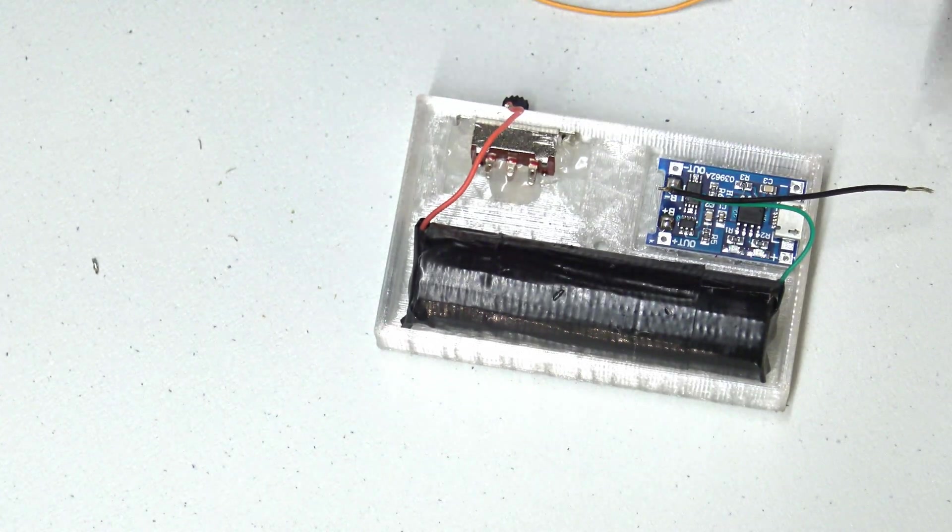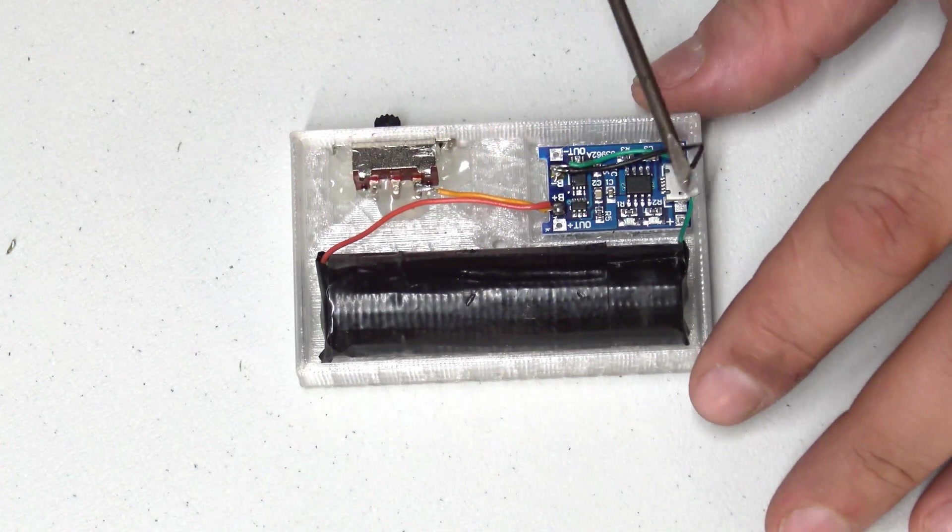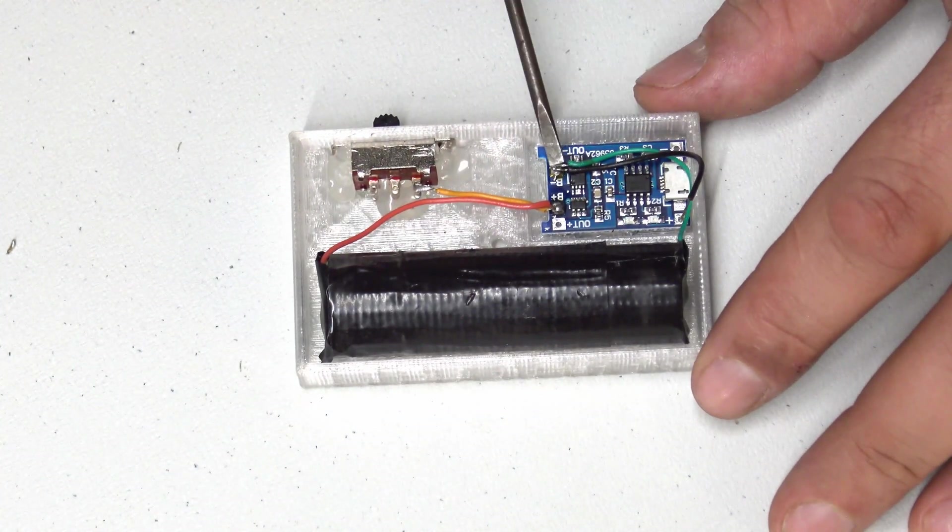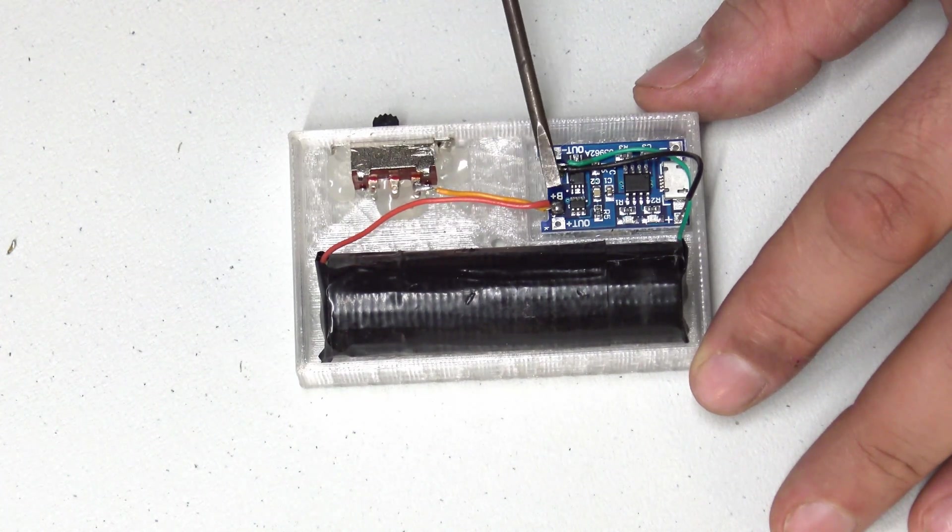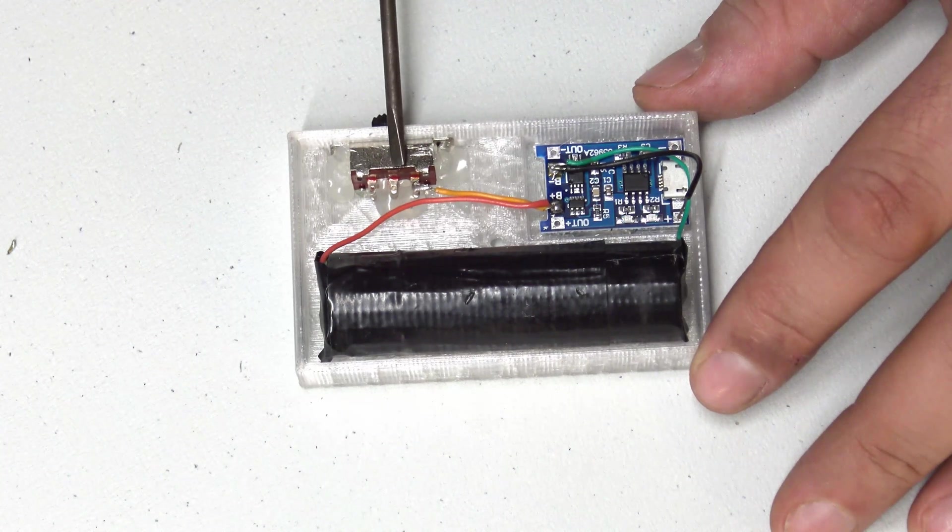And then what we do is we copy the positive to the switch. As you can see there, we've got the switch. We've got the negative lead copied as well. That's the switch lead copied. And that goes continually to the battery.